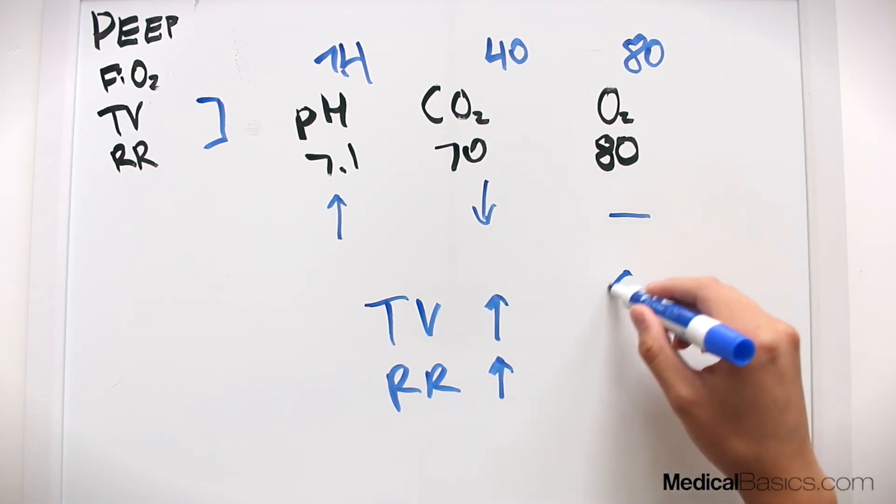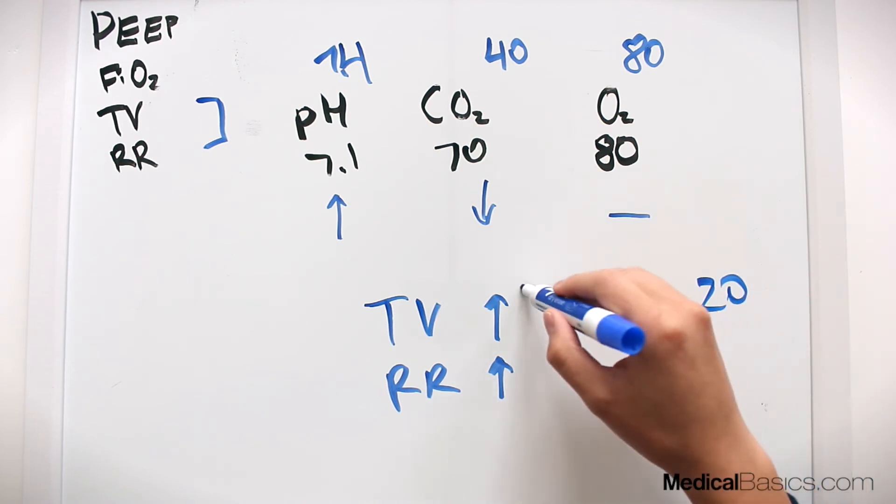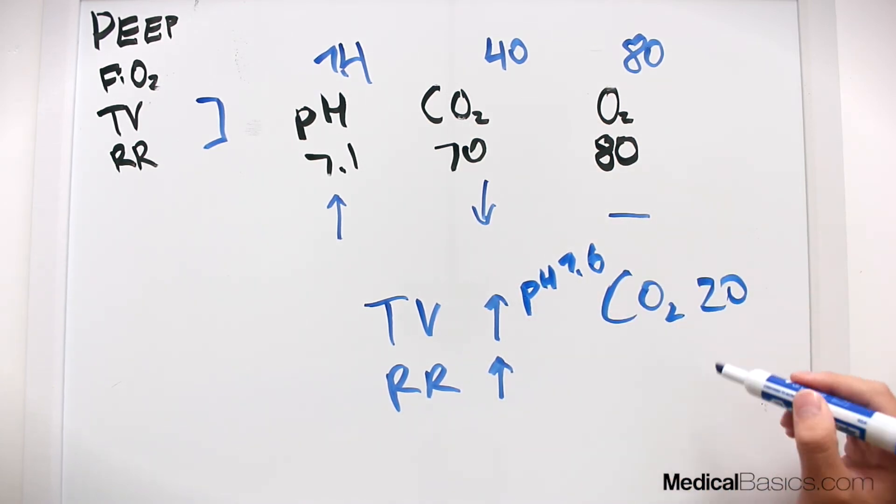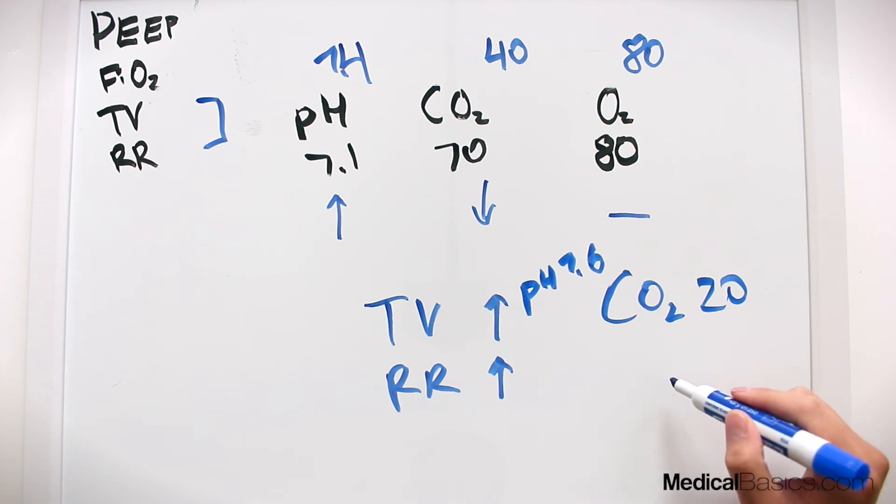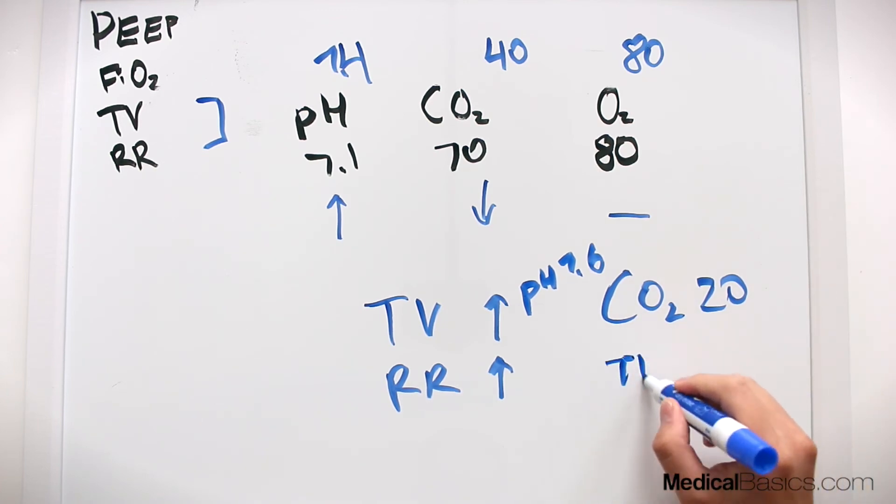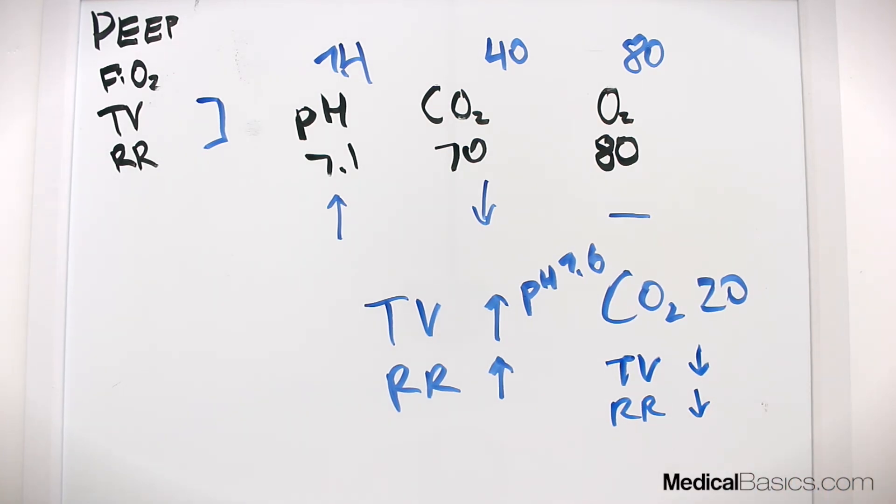The converse would be true if we had a CO2 of, let's say, 20 and we had a pH of maybe 7.6, and we want to try to bring the CO2 up. What we would do is we want to retain the CO2. Remember every time you respirate, you're blowing off CO2. So what we're going to do is for the tidal volume and the respiratory rate, we're just going to decrease that. And these are very simple examples, not necessarily going into the numbers, but just kind of thinking about how we would adjust tidal volume as well as respiration.